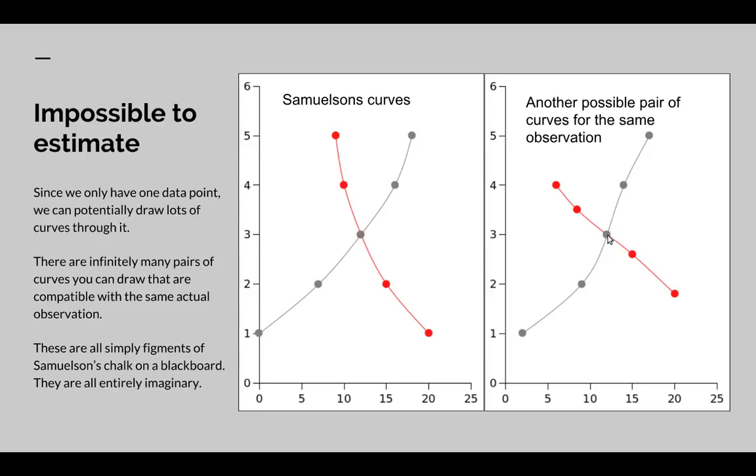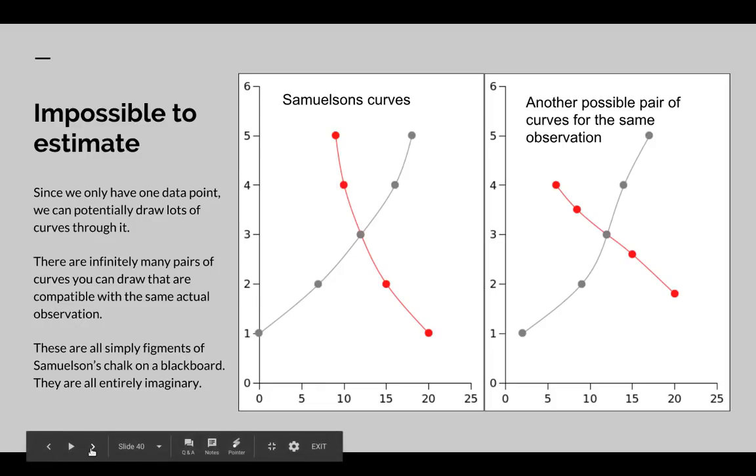The same observed data of 12 and 3 could equally well have been produced by these two curves. Why should it be Samuelson's curves, and why shouldn't it be another pair of curves? It's not an operational theory. A curve and a corresponding function is only a scientific abstraction if there is some operational procedure for estimating the function.